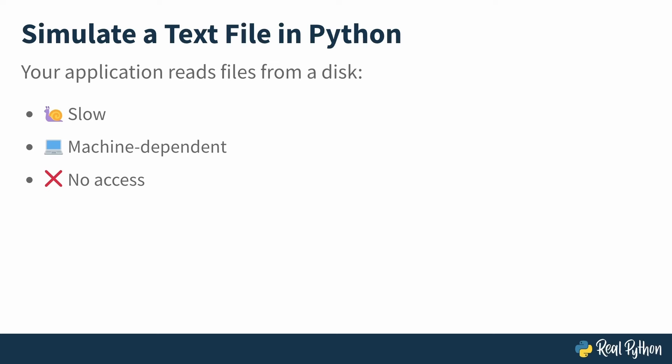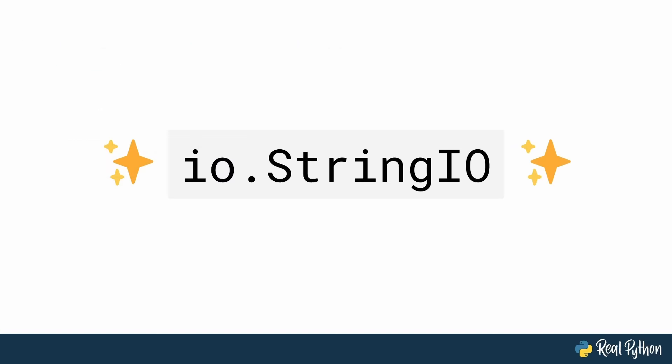In this code conversation, I'll walk you through using Python's StringIO class from the standard library IO module. StringIO is an in-memory file-like object that you can use to simulate a text file on disk. In certain cases, it can be a good solution to reduce time spent on input-output operations and for writing tests for file interactions that can reliably run in any environment. Let's get started.